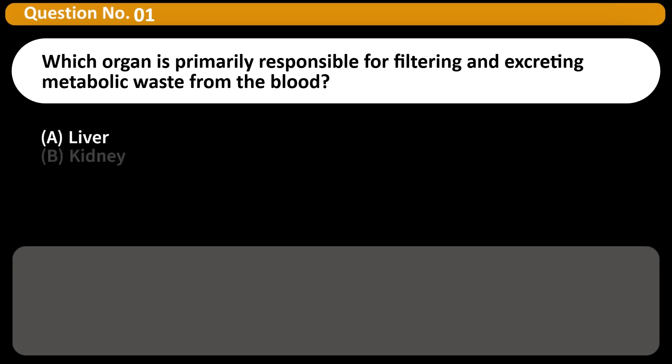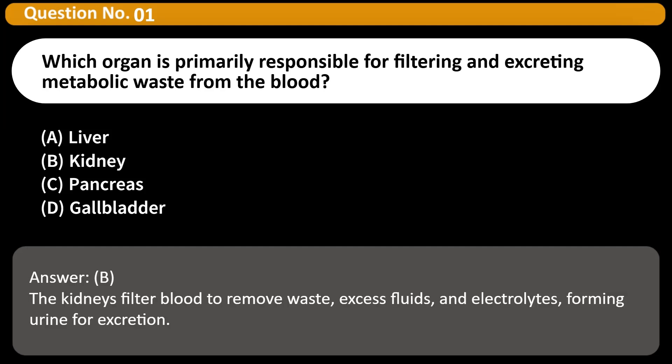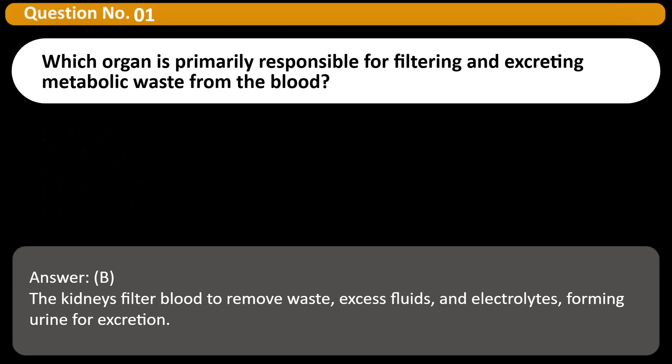Which organ is primarily responsible for filtering and excreting metabolic waste from the blood? A) Liver, B) Kidney, C) Pancreas, D) Gallbladder. Answer: B. The kidneys filter blood to remove waste, excess fluids, and electrolytes, forming urine for excretion.